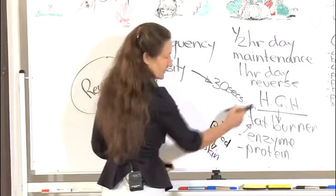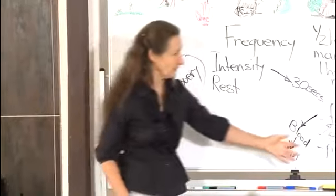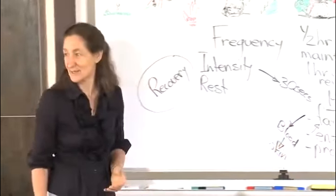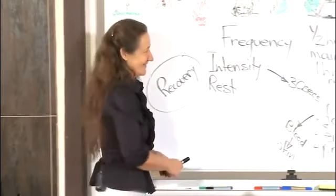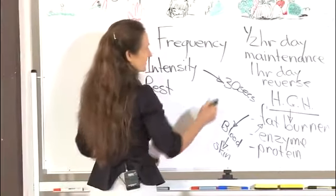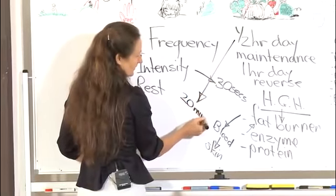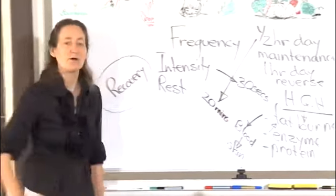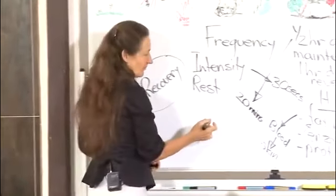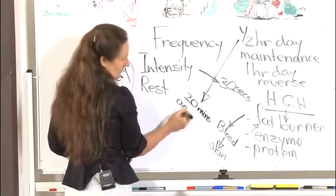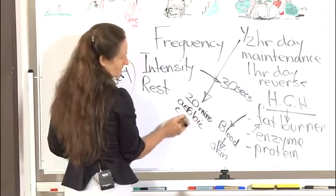No wonder the movie stars pay $1,000 a week for that stuff. You can see why. Keeps them young. Well, I'm offering it to you cut price today, ladies and gentlemen. Half an hour's exercise a day containing a maintenance of 20 minutes aerobic. Aerobic, and your 30 seconds going for it will kick you into that aerobic running.